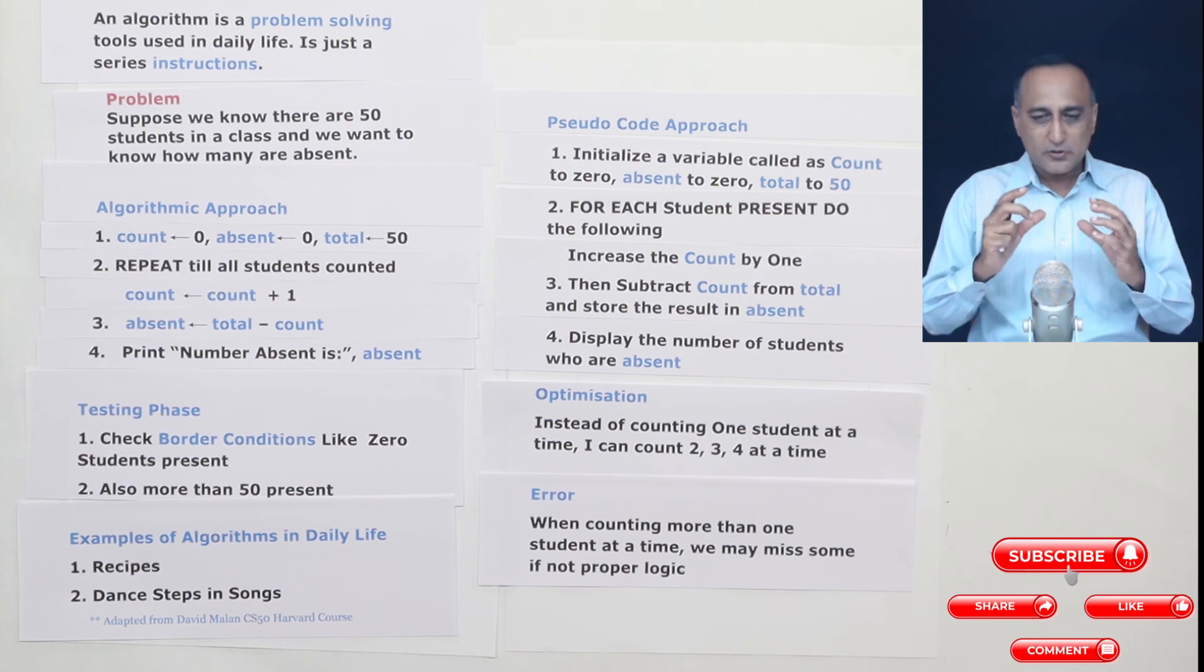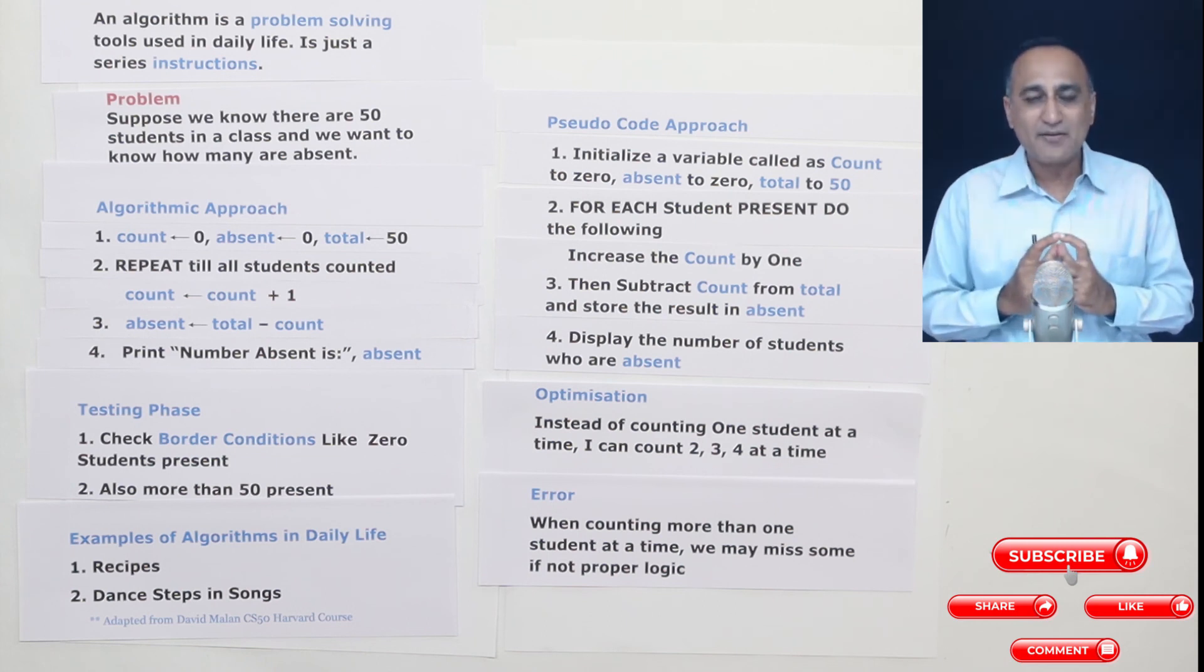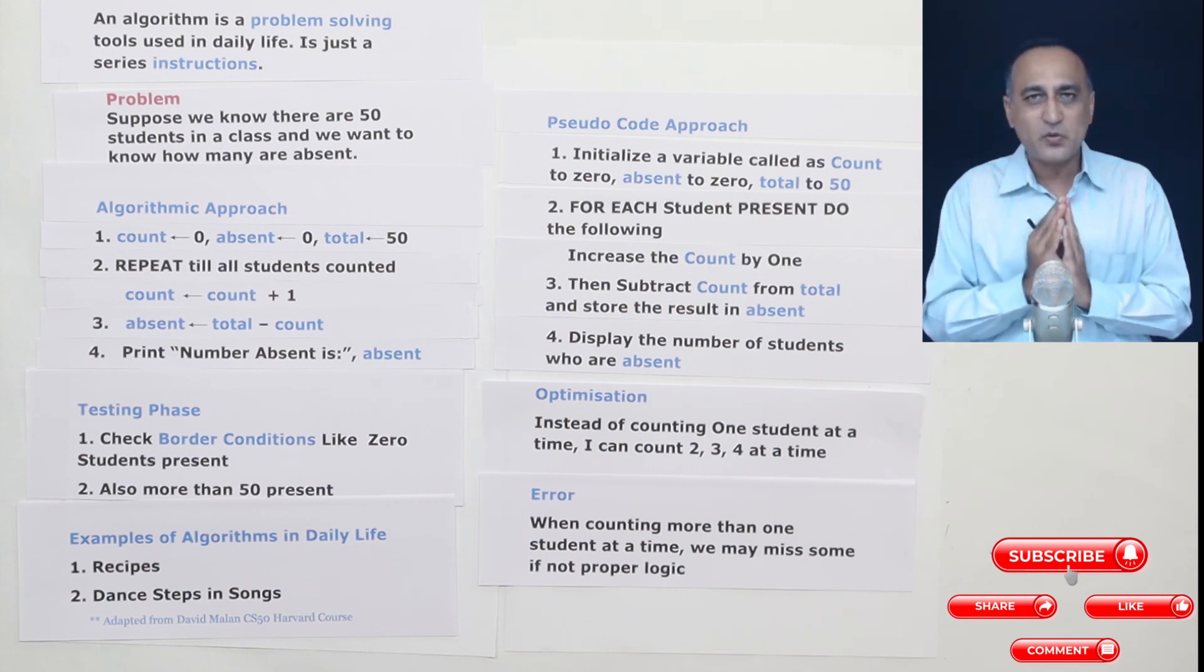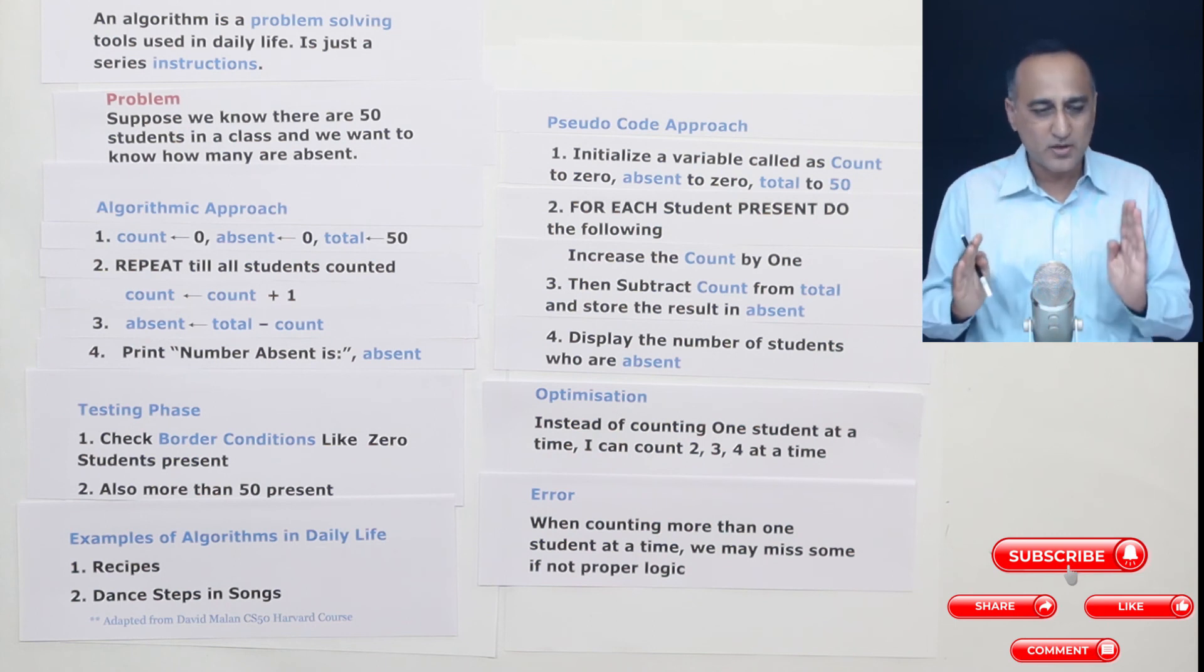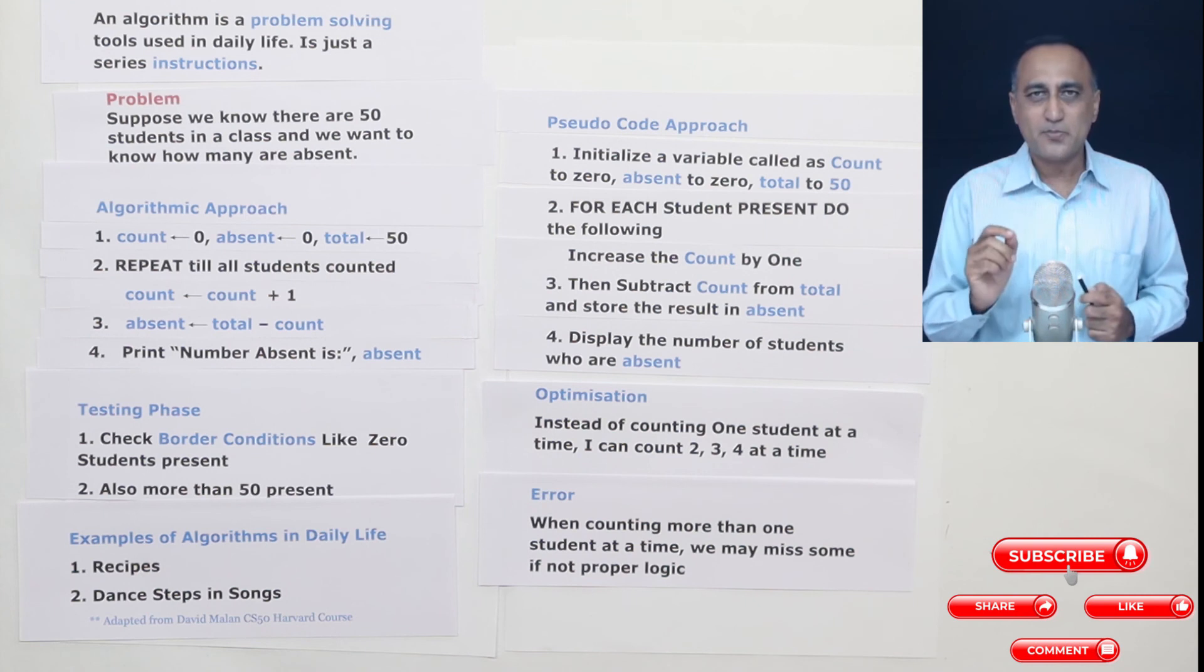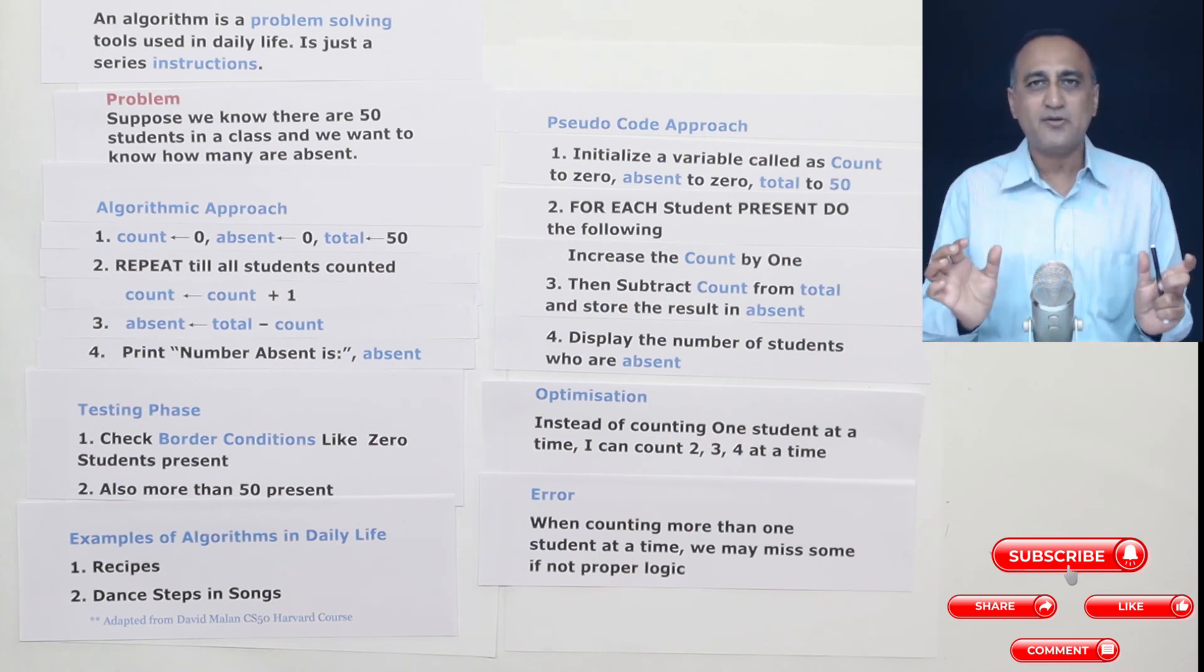So I hope through this discussion, you have been able to have a clear differentiation between what exactly is a pseudocode and what exactly is the algorithmic approach. This is important because we are going to write pseudocode first followed by the algorithm. So that irrespective of how you are required to write the logic of a problem, you are very comfortable and you are able to give a solution.